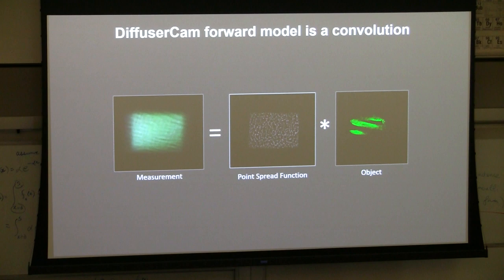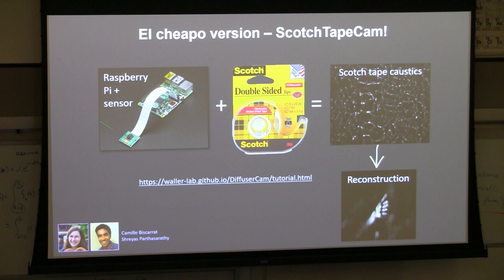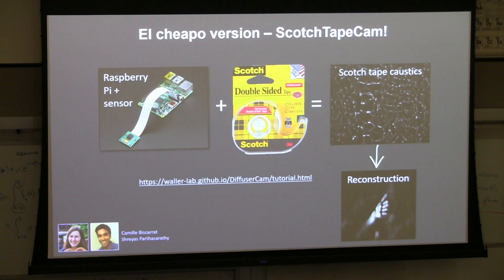The inverse problem is to solve for the object by deconvolving out the point spread function. We can take raw data and reconstruct our scene — this picture is much prettier. An awesome group of undergrads made it work on a Raspberry Pi with Scotch tape as the scattering element, so you can make this at home. They have a hardware-software tutorial online. We'd love beta testers — a few people have gotten it working already.